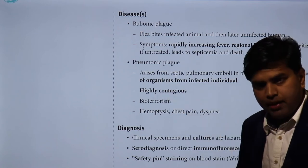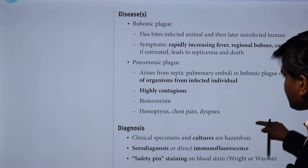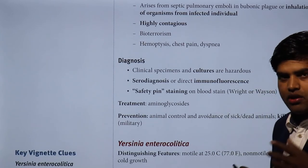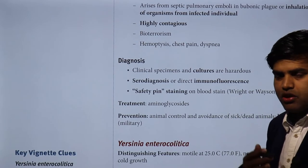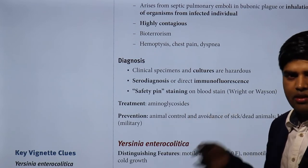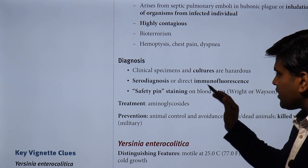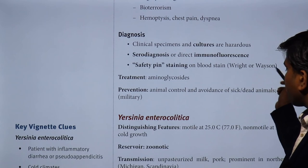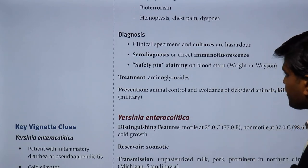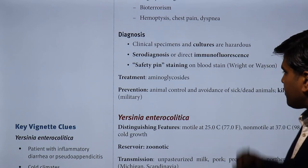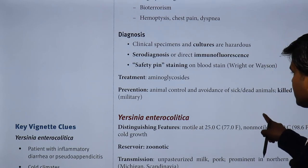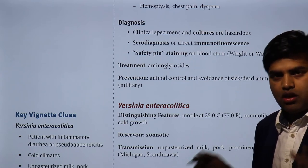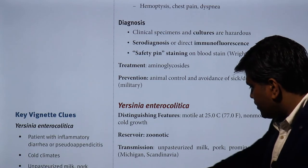Pneumonic plague is highly contagious and is a bioterrorism concern. Symptoms include hemoptysis, chest pain, and dyspnea. Regarding diagnosis: clinical specimens and cultures are hazardous, so serodiagnosis or direct immunofluorescence is used instead. On blood stain, bipolar staining called safety-pin appearance can be seen. Treatment is aminoglycosides. Prevention includes animal control, avoidance of sick and dead animals, and a killed vaccine available for military personnel only.